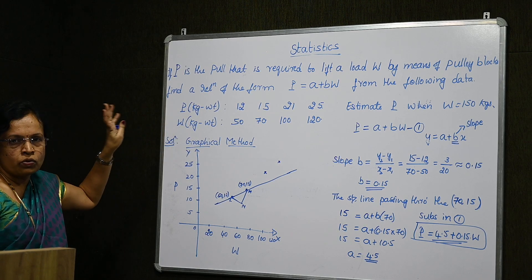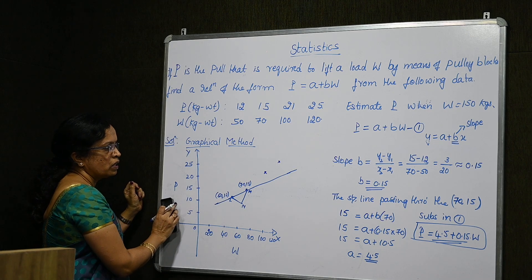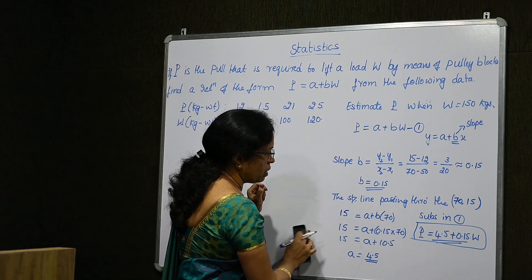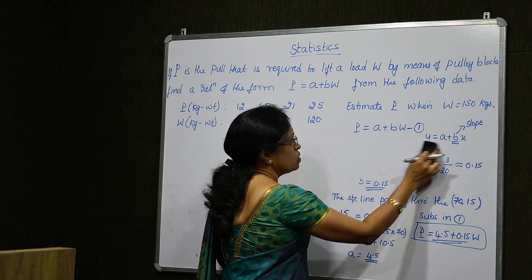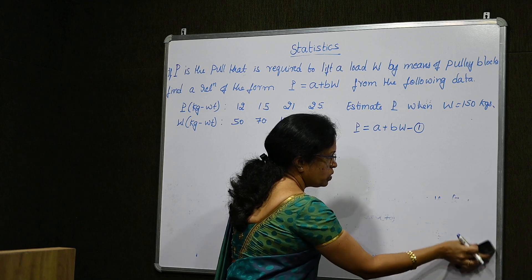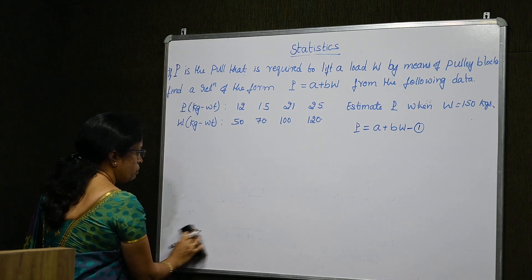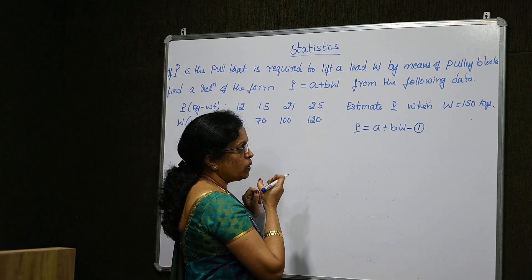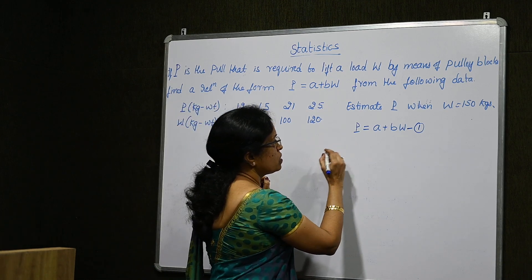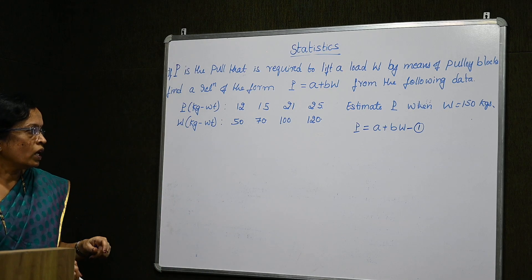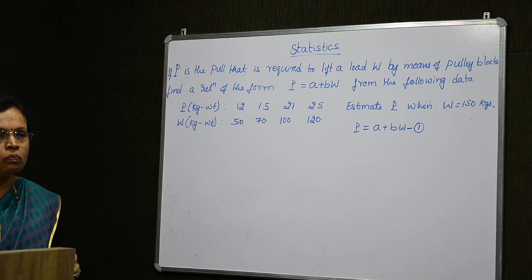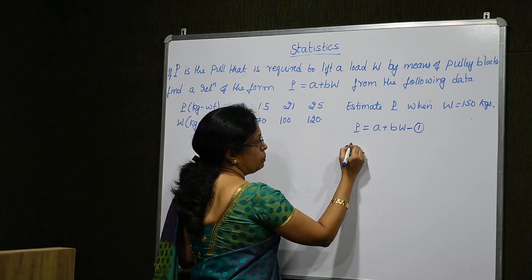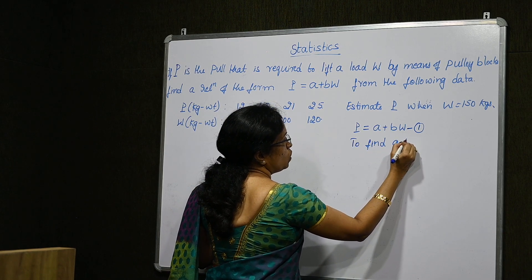Now let us solve the same problem using the method of least squares, and check whether we get the same values of A and B. With the method of least squares, it is not necessary to draw the graph unlike the graphical method. We need to write the normal equations. These normal equations are obtained using the method of least squares, which says the sum of squares of the difference between actual and estimated values must be as minimum as possible. To find A and B, we use normal equations.